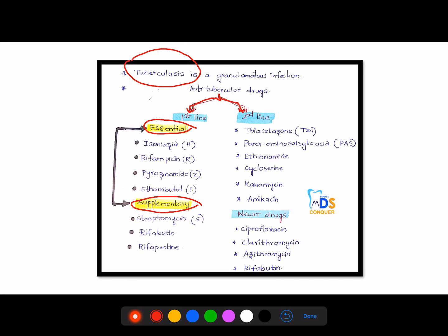First-line drugs which are essential include HRZE. That means H is isoniazid, rifampicin is R, pyrazinamide is Z, whereas ethambutol is E. Whereas supplementary drugs include streptomycin, rifabutin, and rifapentine.